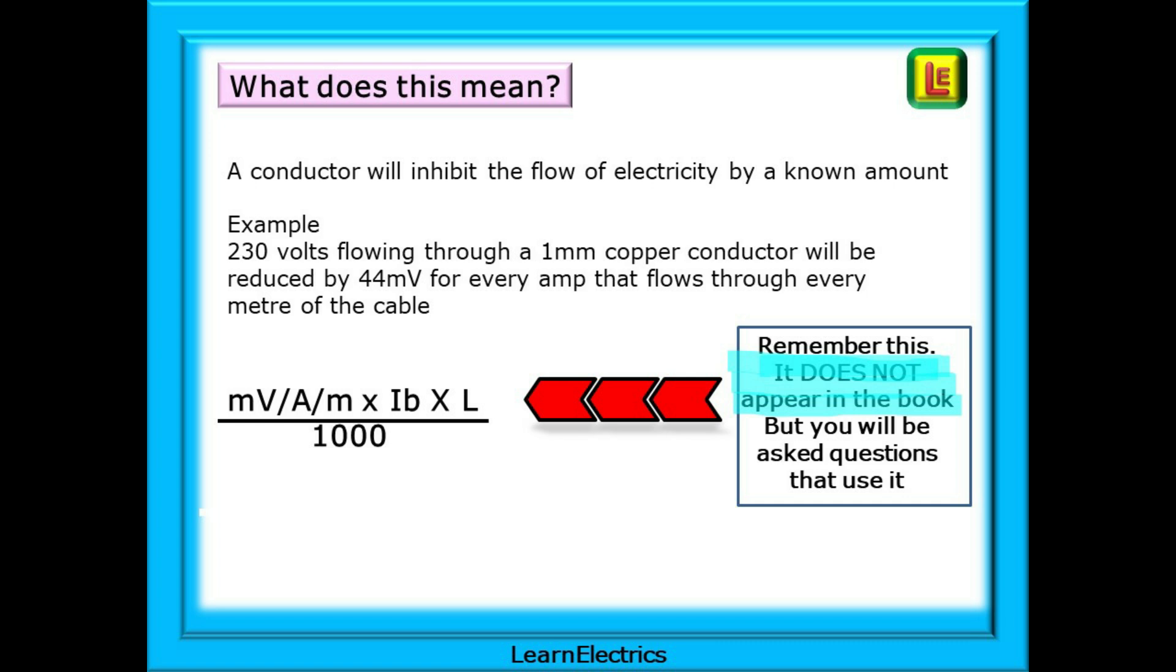230 volts flowing through a 1mm copper conductor will be reduced by 44 millivolts for every amp that flows through every meter of the cable. Here is the formula to use. The millivolts per amp per meter is obtained from the tables section of the book. IB is the design current. It is the maximum current that is expected in the circuit and the length is in meters. We divide all that by the number 1000 to convert millivolts into volts so that we can compare the answer directly with the 3% or 5% maximum permitted values. You must remember this formula. It does not appear in the wiring regulations book which is the only book allowed in the exam. But you will be asked questions on voltage drop and you will be expected to use this formula.